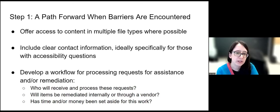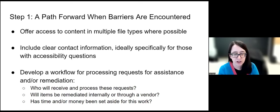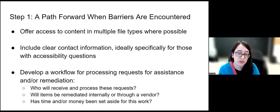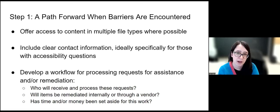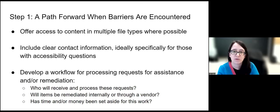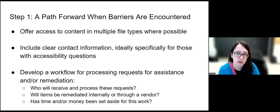It's also important to include clear contact information, ideally specifically for those with accessibility questions — on your website, discovery tool, or institutional repository. You should specifically say: this is who you contact for accessibility questions. The reason is that a lot of times people might assume there isn't a path forward for them. If they don't see it called out as a service and encounter a barrier, they might think this information isn't available to them and not feel there's a step forward, assuming a general contact won't help with accessibility requests.